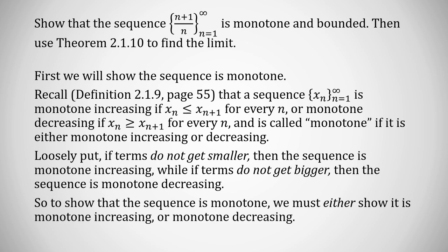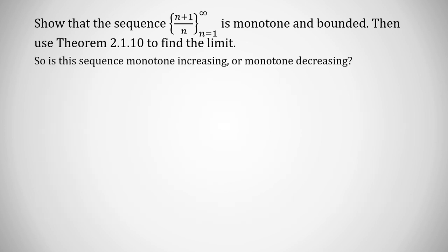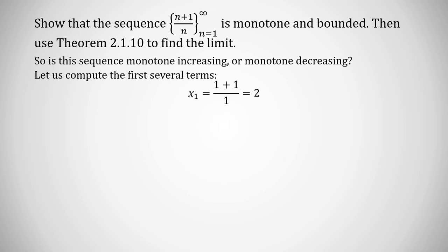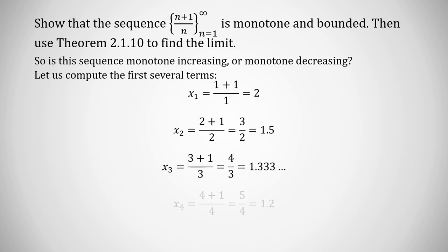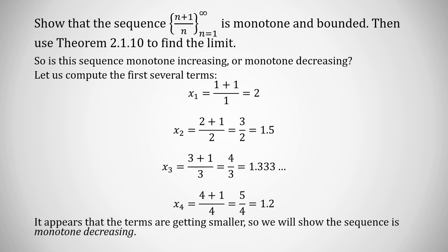To show that the given sequence is monotone, we need to show it is either monotone increasing or monotone decreasing. Let's compute a few terms. x_1 = (1+1)/1 = 2, x_2 = (2+1)/2 = 3/2 = 1.5, which is smaller. x_3 is even smaller and x_4 smaller still. By computing a few terms it certainly appears the terms are getting smaller — though that is not a proof. We're going to show the sequence is monotone decreasing.